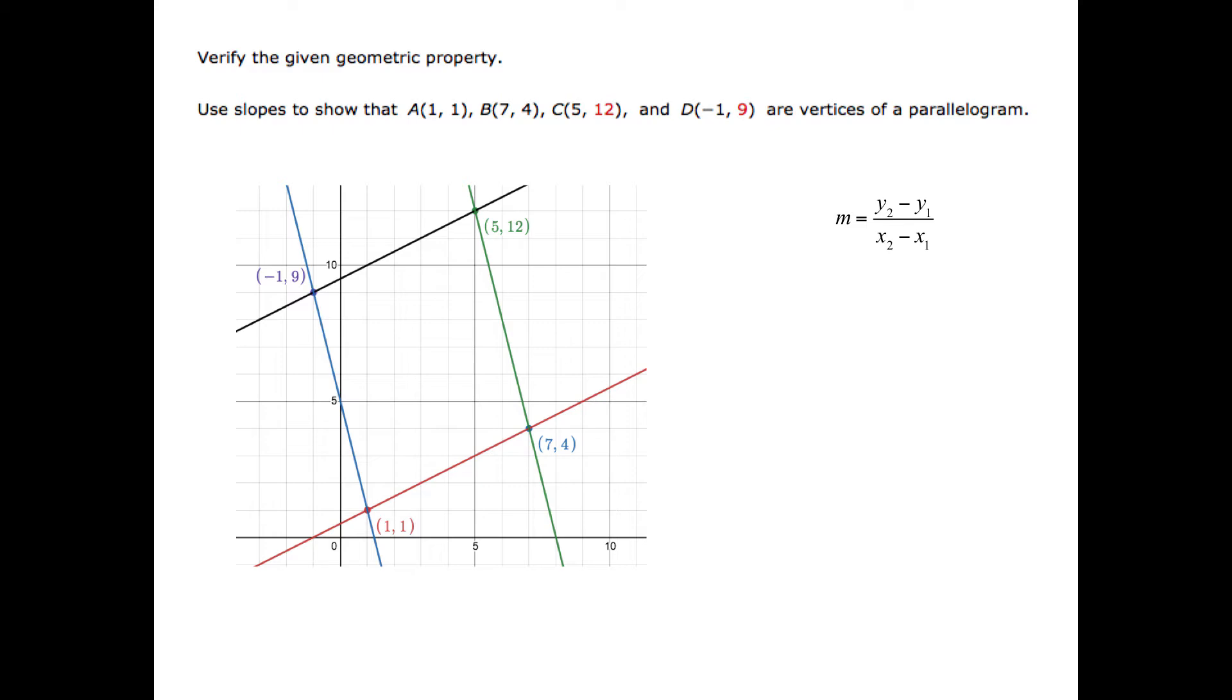We could begin by finding the slope of the line that passes through the pair of points. Substituting these values into the slope formula, we would get -9 divided by 5 minus the opposite of -1. Then as we simplify, we would find 3 over 5 plus 1, which would be 3 over 6, and would simplify to 1 half. So the slope of this line is 1 half.